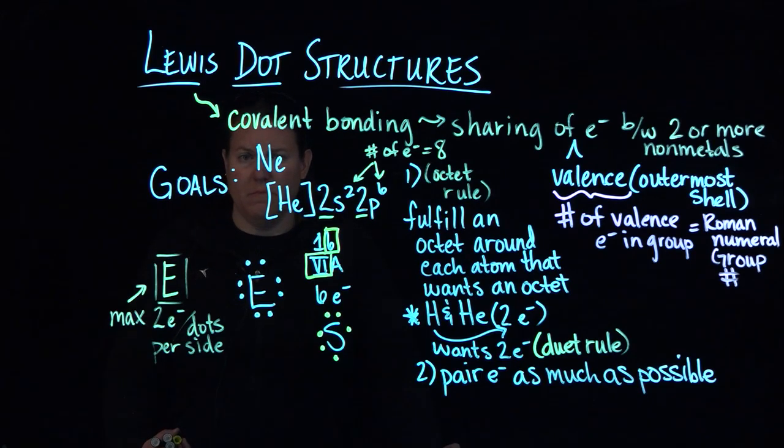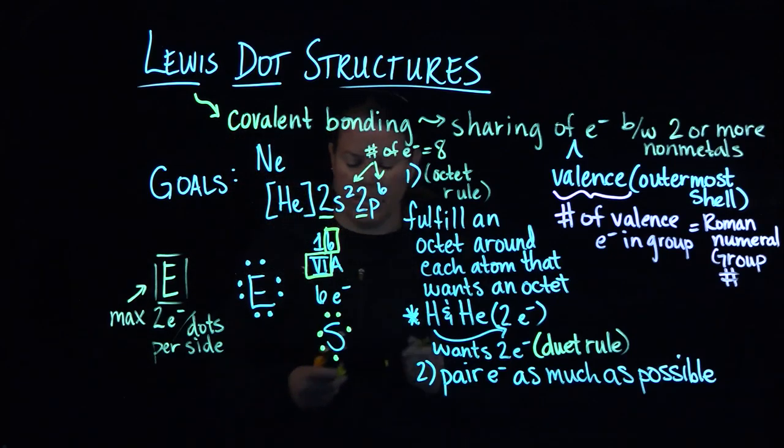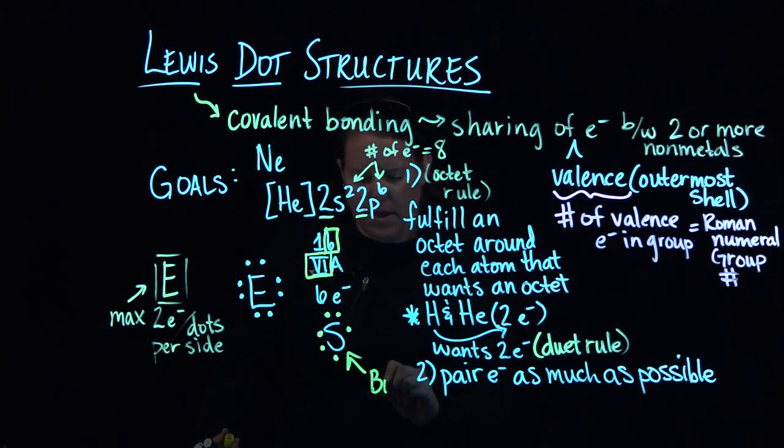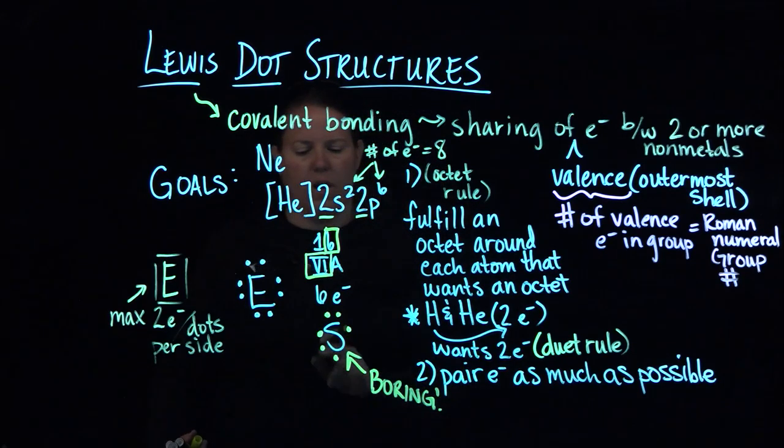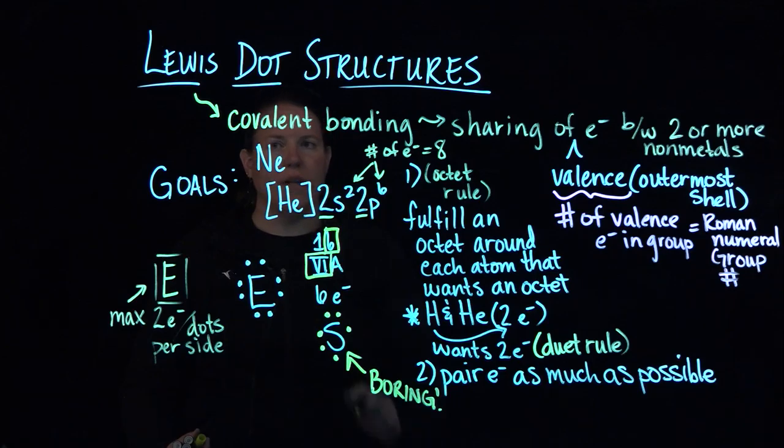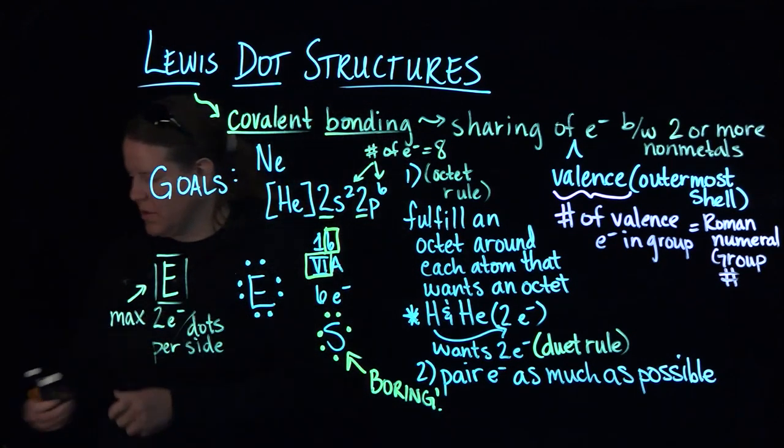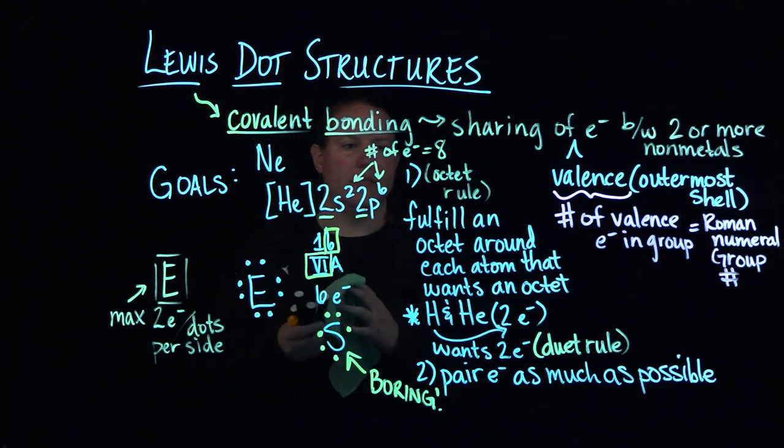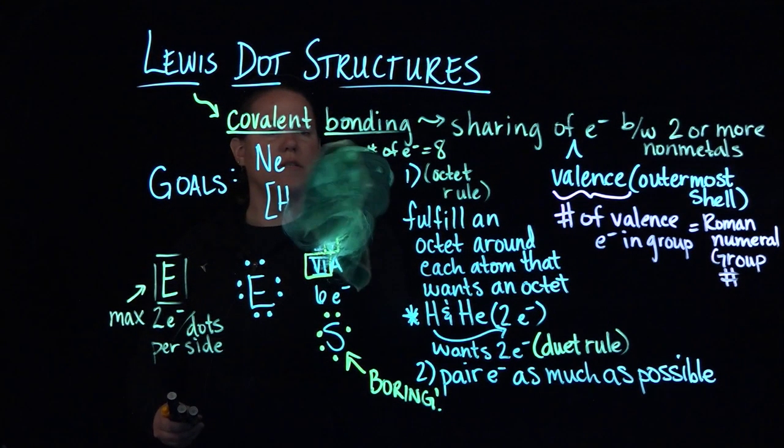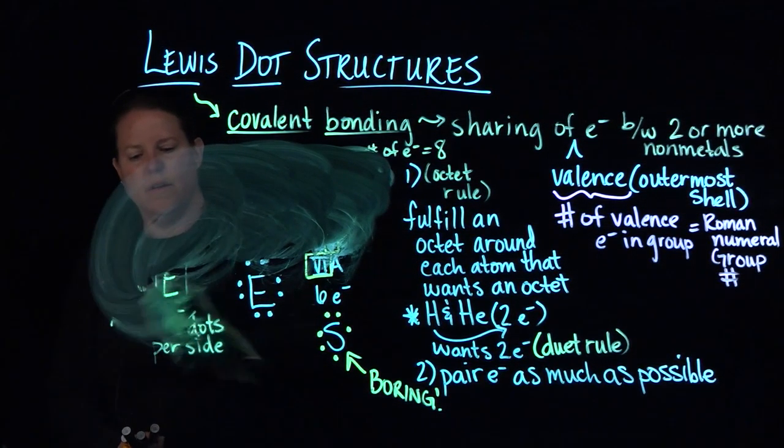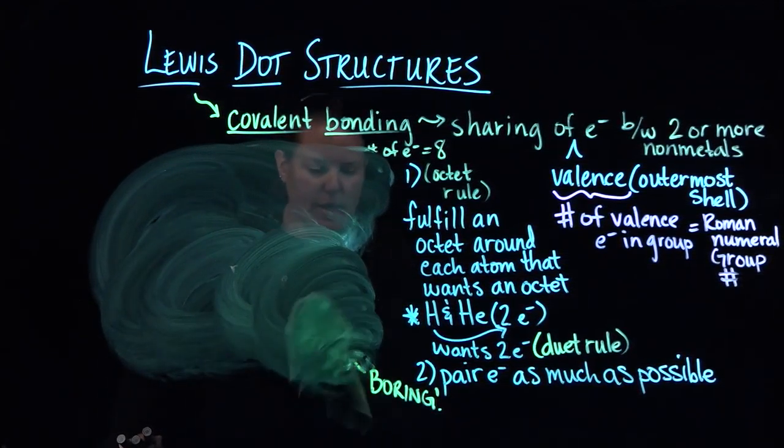Does it matter? No. Do some folks care about that? Yes, so just FYI. But this is awfully boring, right? That's boring. Why in the world would I do a Lewis dot structure on one single element when it's used to show covalent bonding? So let's show some bonding. That's the good stuff right there.